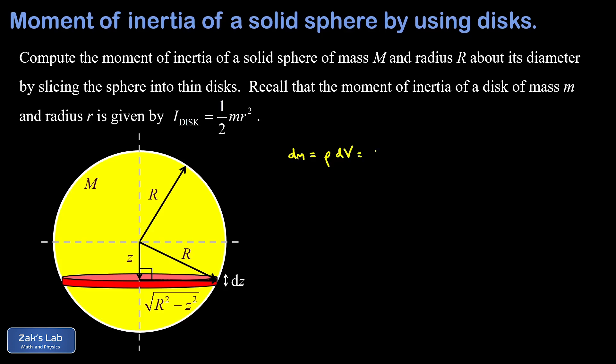We'll just take it slow and call that volume dv. It's an infinitesimal volume. Well the volume of a disk is given by the area multiplied by the thickness, and the area is pi times the radius squared. So we have pi times the square of this quantity square root r squared minus z squared. Well when we square that we just get r squared minus z squared.